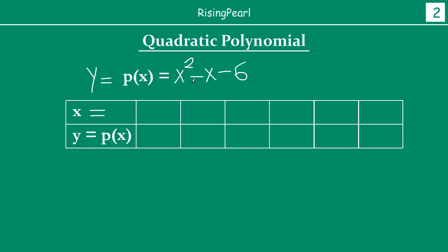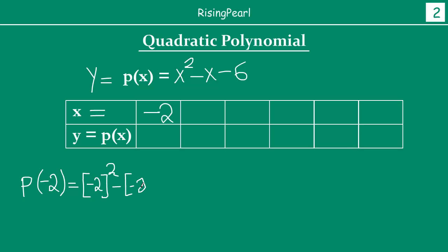Let's take x equals minus 2. The value of the polynomial p(−2) is: (−2)² minus (−2) minus 6, which gives 4 plus 2 minus 6, equals 0. So at x = −2, y = 0.